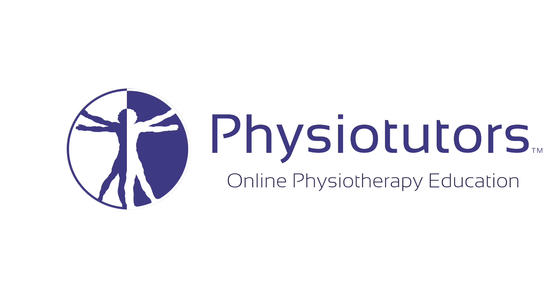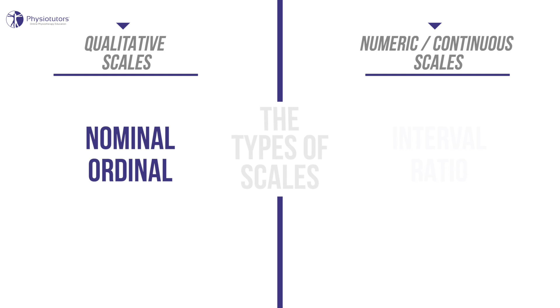In this video you are going to learn about the four different types of data measurement scales and how to distinguish them from each other. Hi and welcome back to Physiotutors. Descriptive statistics can help you to order and summarize data in order to have a better overview and to display a data's tendency and dispersion. Which methods can be used depends on the variables of the data. Data can be measured on four different scales, which are simply ways to categorize different types of variables. Nominal and ordinal scales are called qualitative scales and intervals and ratios are called numeric or continuous scales.